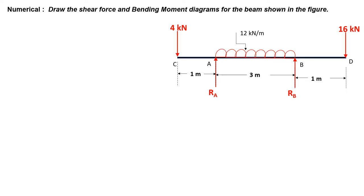We have to draw the shear force and bending moment diagrams of the beam shown in the figure. There is a simply supported beam CABD, and in the middle this beam has two supports. It is simply supported, so this beam is a classical case of a simply supported beam with overhang on both sides. AC is an overhang, BD is an overhang, and the beam is simply supported between supports A and B. This beam has two concentrated loads at the ends: 16 kN at end D and 4 kN at end C.